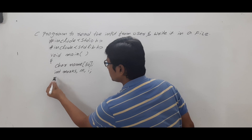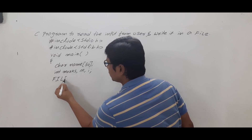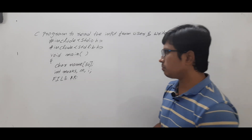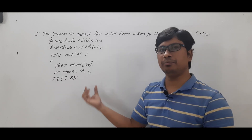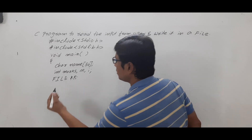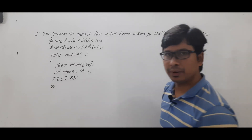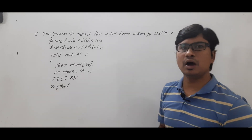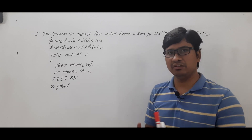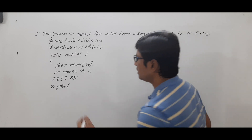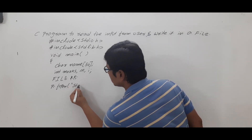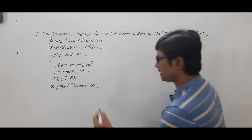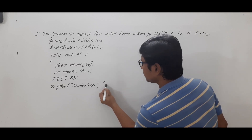Next I need to declare a file pointer. I use the type FILE and the pointer variable p, so p can hold the address of a particular file. I then open the file using fopen, which takes two arguments: the name of the file with its extension, and the mode. Here I am opening a file called student.txt in write mode.